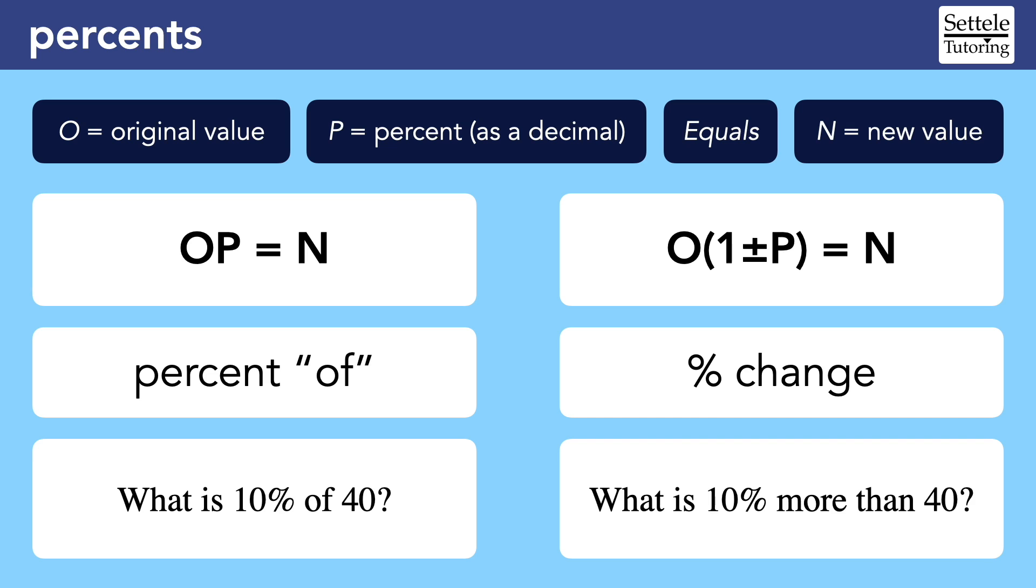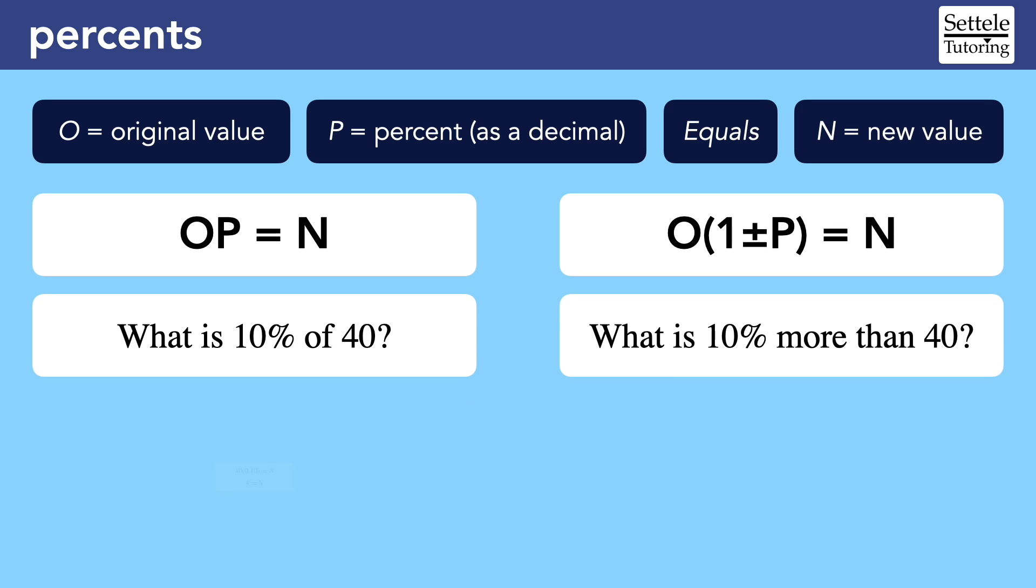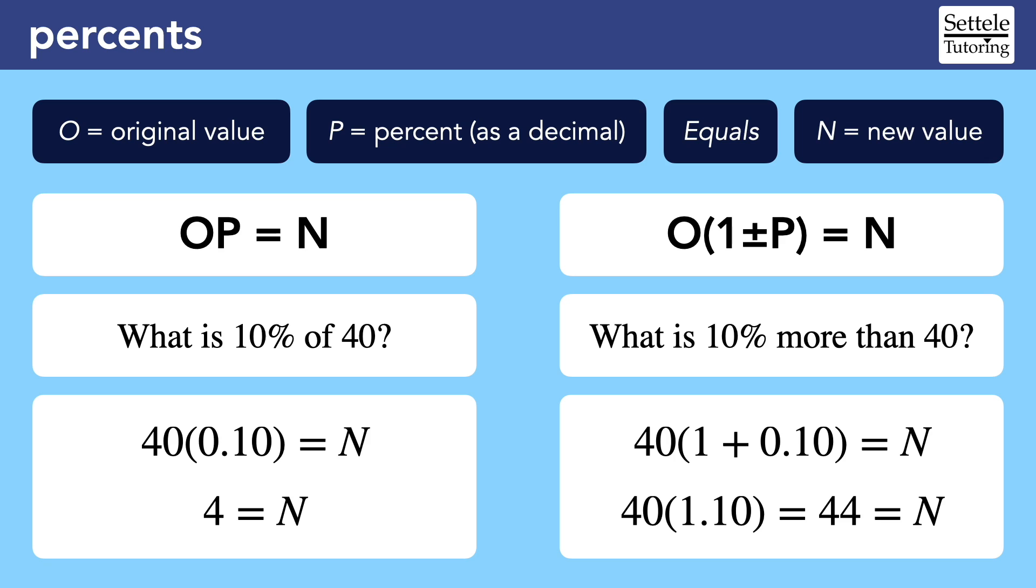We can better understand the difference by looking at simple examples. The basic OP formula is for when we're asked something like, what is 10% of 40? But sometimes we're asked to change a value. For example, what is 10% more than 40? And this other OP formula allows us to make that change in a very simple, intuitive way. In both cases, the original value is the 40 that we start with. We would then convert the 10% to a decimal by moving the decimal point two places to the left. Simplify and solve for the new value N. Notice that the OP formula on the left works the same way that you probably think about percentages naturally. In fact, if you were asked to increase 40 by 10%, like on the right, you might start by finding the 10% separately, then adding it to 40 at the end. The 1 plus or minus P formula does both steps for us, which is extremely helpful when the SAT twists percentage questions so that we have to work backwards.